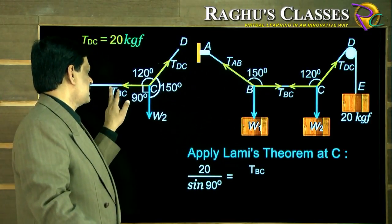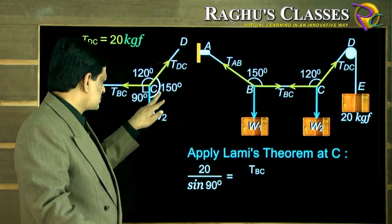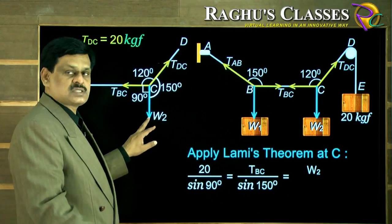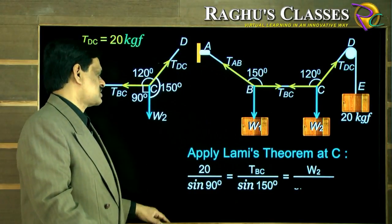The opposite angle between the other two forces is 90. This equals TBC upon sin 150, equals W2 upon sin 120.